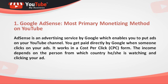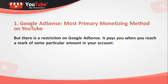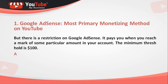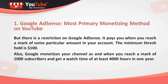Number one: Google AdSense — the most primary monetization method on YouTube. AdSense is an advertising service by Google which enables you to put ads on your YouTube channel. You get paid directly by Google when someone clicks on your ads. It works in a cost-per-click (CPC) form. The income depends on the country from which the person is watching and clicking your ad. There is a restriction though — Google AdSense pays you only when you reach a minimum threshold of $100 in your account.